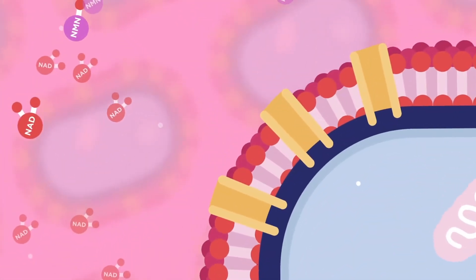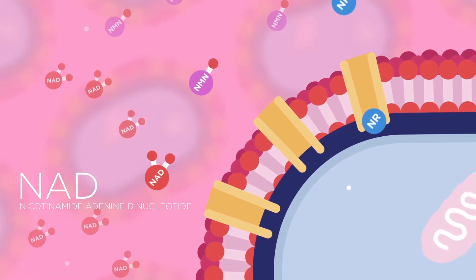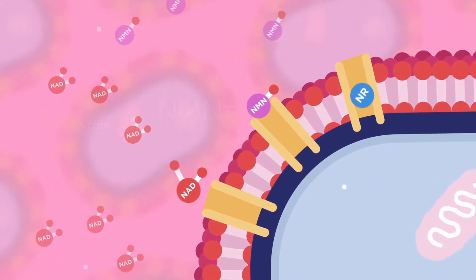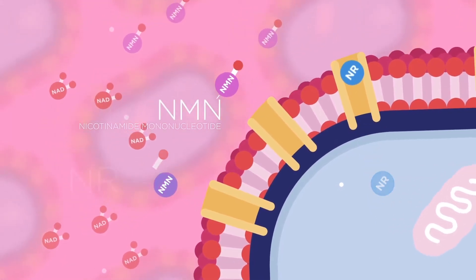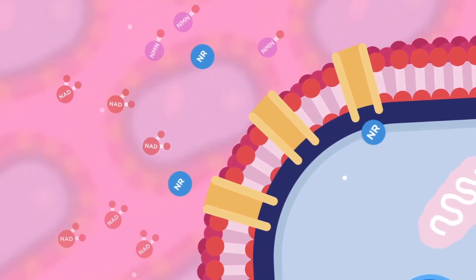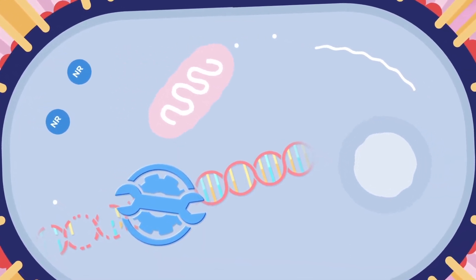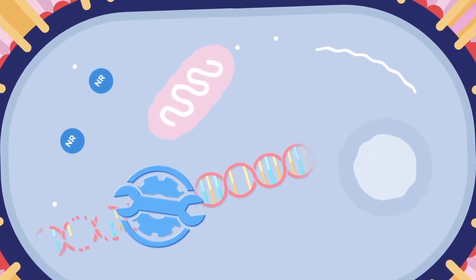To keep up with all the work, a sufficient supply of an essential molecule called NAD must be maintained. NAD and most other precursors, such as NMN, must transform into NR, nicotinamide riboside, or niogen, which is optimized for crossing into each cell. Once in the cell, NR is rapidly converted into NAD.